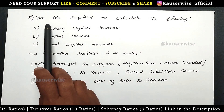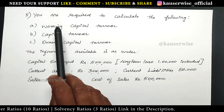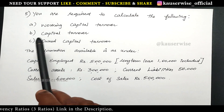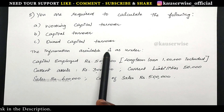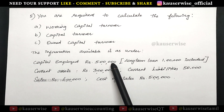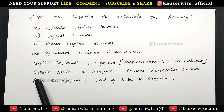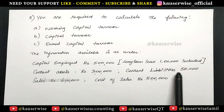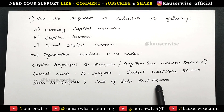Now in this video we are going to see the remaining 3 ratios which come under turnover ratio. You are required to calculate the following: Number 1, working capital turnover. Number 2, capital turnover. Number 3, owned capital turnover. The information available is: capital employed 5 lakhs with long term loan of 1 lakh included, current assets 3 lakhs, current liabilities 50,000, sales 6 lakhs, cost of sales 5 lakhs.